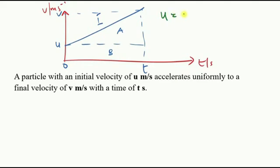So we said u here is our initial velocity, and v is the final velocity.